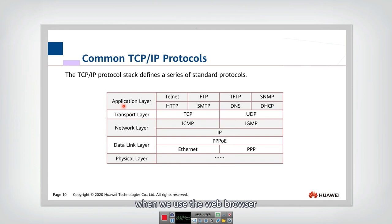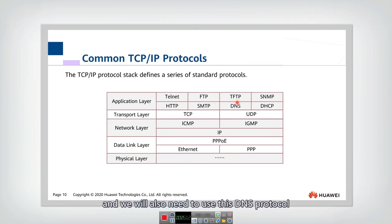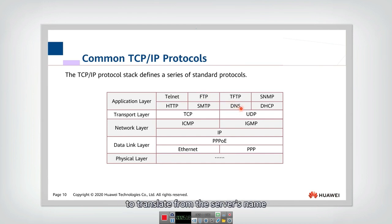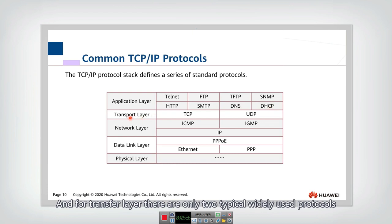Common TCP/IP protocols include the following. In the application layer, when using a web browser we use HTTP to access a remote web server and download web pages. To upload or download files from a server, we use FTP. We also use DNS — the Domain Name System protocol — to translate a host name to an IP address. DHCP is used to dynamically configure IP addresses for hosts and routers.